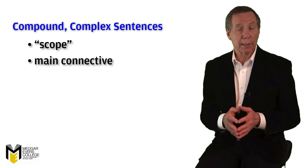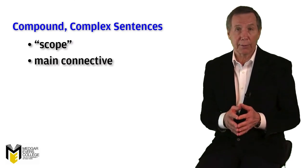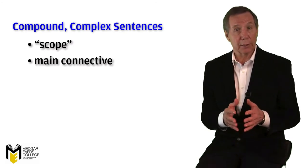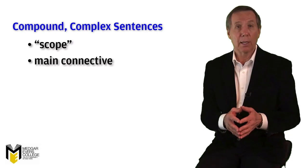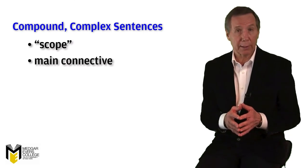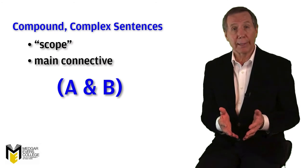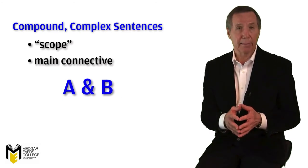First, we can leave off parentheses that occur around the entire sentence, such as the parentheses that surround the conjunction of two atomic statements. Rather than place parentheses around a conjunction like this, we can simply write A and B.